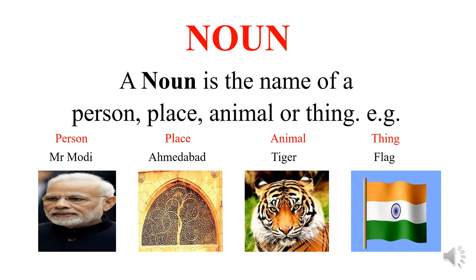Next, animal: tiger, dog, cat, elephant — all other names of the animals. Next, thing: flag, a precious thing, isn't it? Or your bag, your box, your bottle, your pencil — all other names of the things.